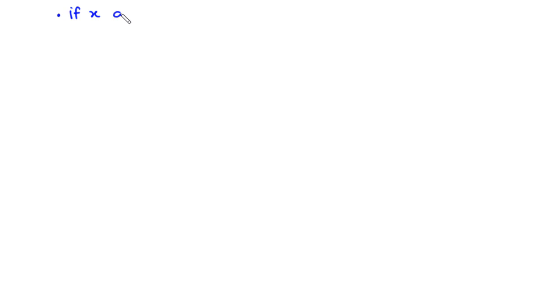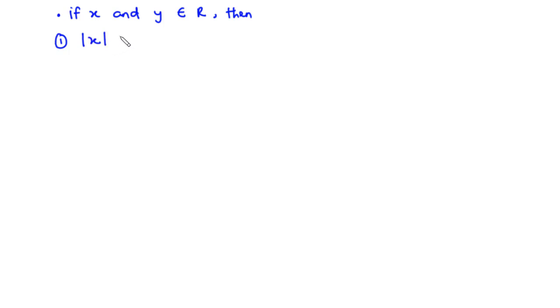Now let's consider some of the basic properties of absolute value. If x and y are members of set R, then: (1) the absolute value of x is greater than or equal to zero, and the absolute value of y is also greater than or equal to zero. Thus the absolute value of any real number is greater than or equal to zero.